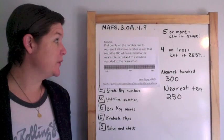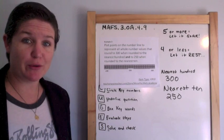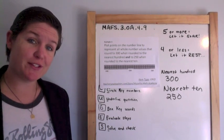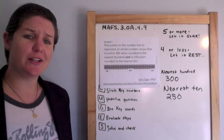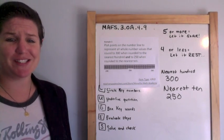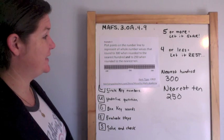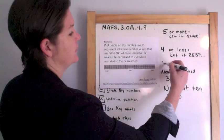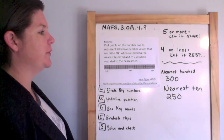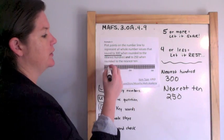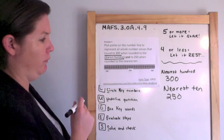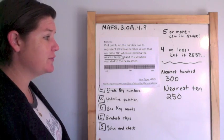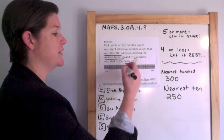This is probably one of the hardest, most challenging rounding problems to solve. This is a grid response. There is an example of this in the item specs. And it's kind of hard to teach, but I'm going to try to do my best. So it says, plot the points on the number line to represent all whole number values that round to three hundred when rounded to the nearest hundred and two hundred fifty when rounded to the nearest ten.